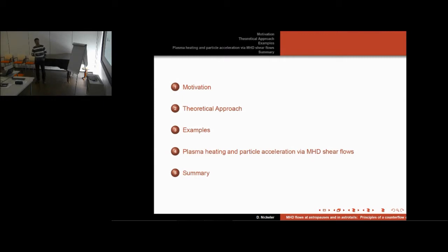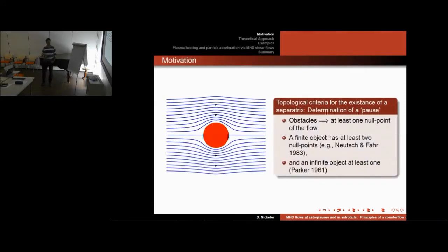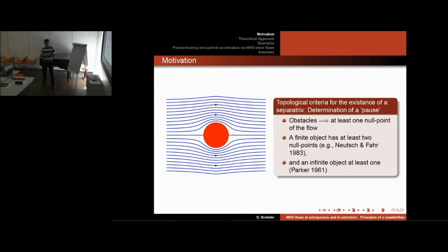The motivation is the interaction between different plasma flows. I will talk about our theoretical approach, give some examples of how such interaction regions can look, and what it has to do with plasma heating and particle acceleration. The theory of magnetohydrodynamics — basically, if you have a stream, a small river, and a stone inside, if you have a flow around an obstacle, somewhere this flow has to stop because the obstacle will decelerate the flow.